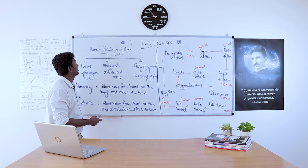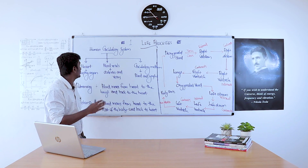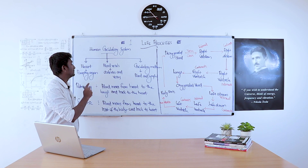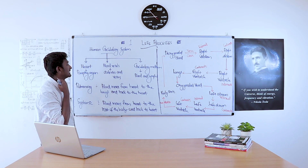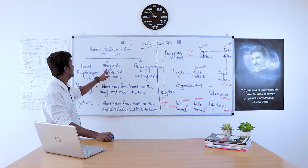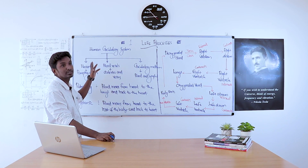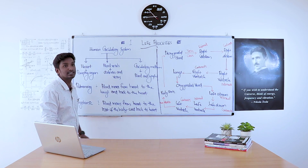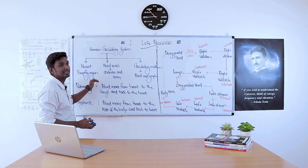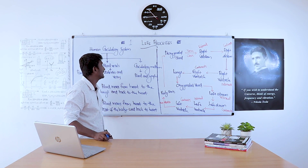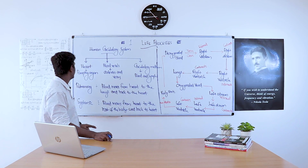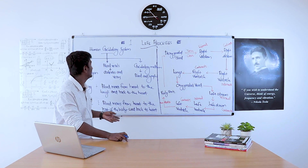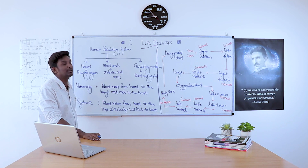The human circulatory system consists mainly of a pumping organ — the heart — blood vessels which include arteries and veins, and a circulatory medium which is blood. Together, the heart, blood vessels, and circulatory medium constitute the human circulatory system. In the human body, circulation is double circulation: pulmonary circulation and systemic circulation.